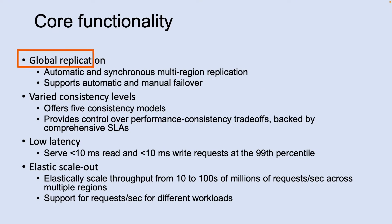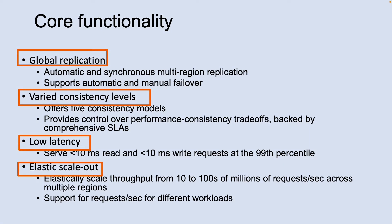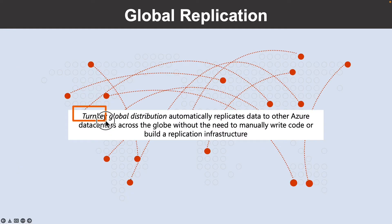Azure Cosmos DB has four core features that are the same regardless of which API you choose: global replication, varied consistency levels, low latency, and elastic scale-out. Azure Cosmos DB has a feature referred to as turnkey global distribution that automatically replicates data to other Azure data centers across the globe without the need to manually write code or build a replication infrastructure.